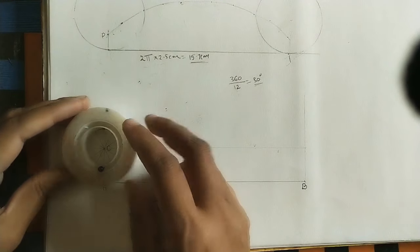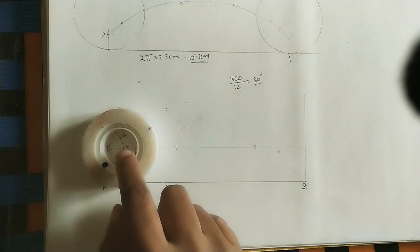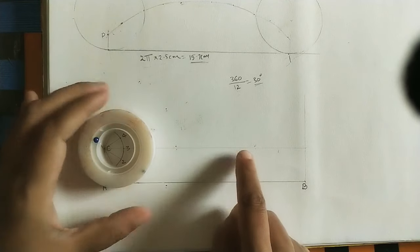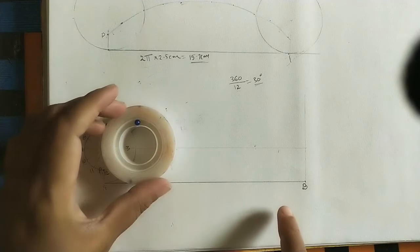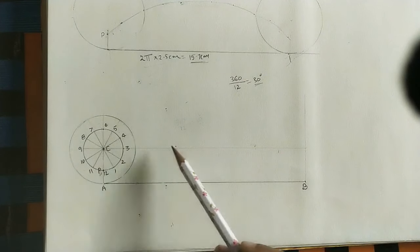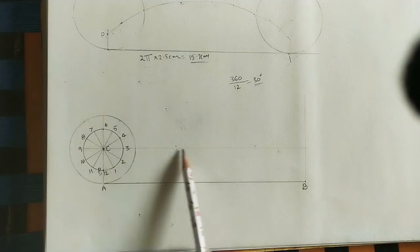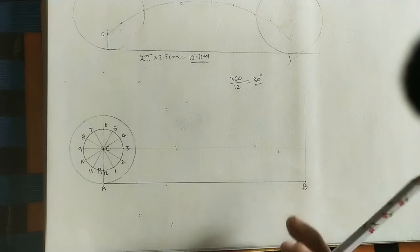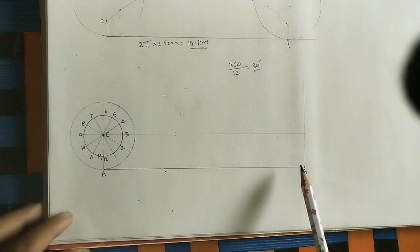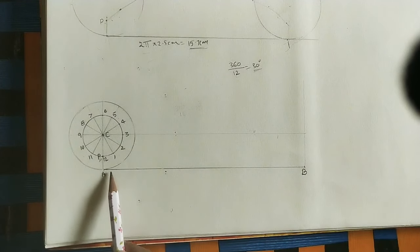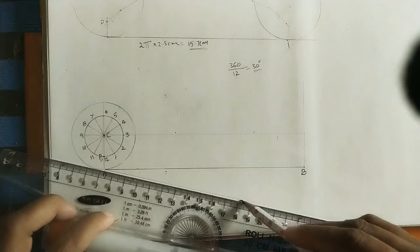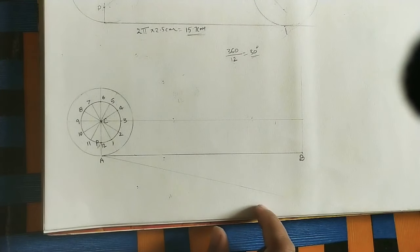The center moves from C to C1, C2, C3... as the circle rolls along the horizontal path. All centers lie on the same horizontal center line. We need to mark 12 centers corresponding to 12 divisions. To divide the baseline into 12 equal parts, draw an inclined line at any angle less than 30 degrees from point A and use a compass to mark 12 equal arcs along it.